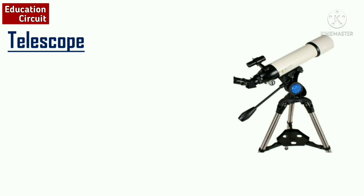Next is the telescope. A telescope is used to see objects located very far from us, like the sun, moon, stars, satellites, etc. These are the instruments used to see objects.